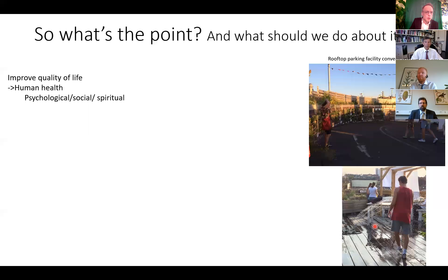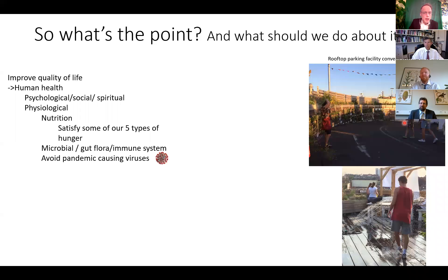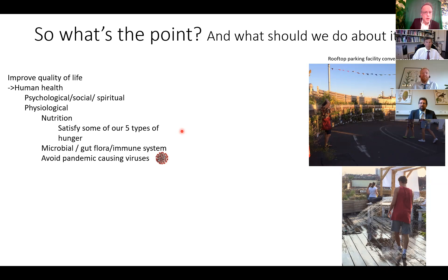The point is of course to improve quality of life — meaning to improve human health — which can involve psychological, social, and spiritual factors. For example, when my family visited urban agriculture in Berlin, a rooftop parking facility converted to urban agriculture, it was really a spiritual experience. We also have physiological factors — nutrition for the population and satisfying our five types of hunger. There is also the microbial gut flora and immune system factors. You can check out the five types of hunger yourself on New Scientist.